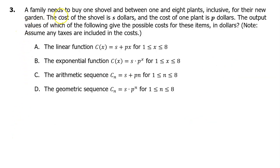Number 3. A family needs to buy one shovel and between one and eight plants inclusive for their new garden. Between one and eight inclusive means including one and eight as possible answers. The cost of the shovel is S dollars, and the cost of one plant is P dollars. The output values of which of the following give the possible costs for these items in dollars? Note, assume any taxes are included in the costs. First we need to decide if we should use functions like A and B or sequences like C and D. In general, functions like A and B are continuous, while sequences like C and D are discrete values, individual points.